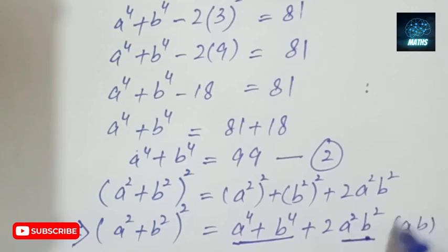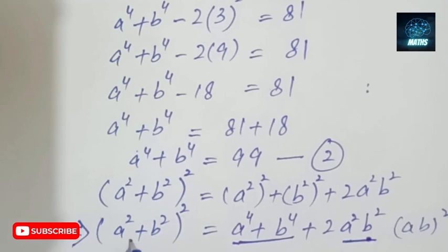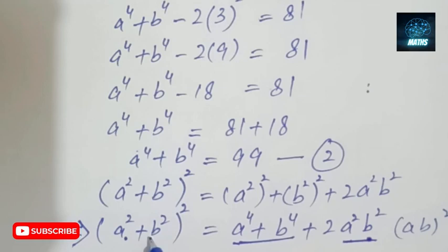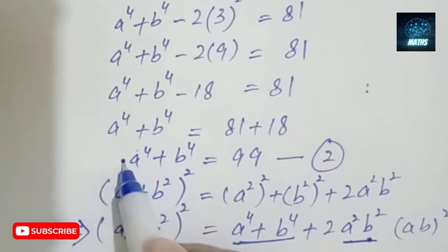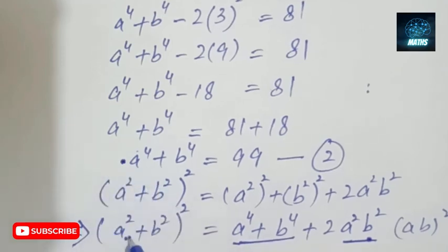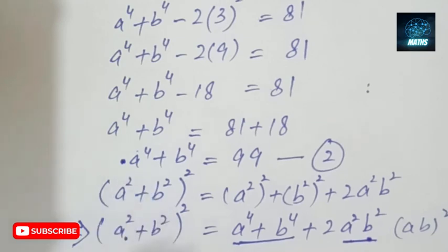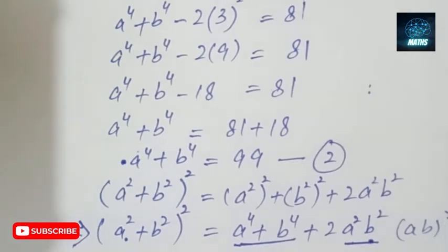I can write (a² plus b²)² using the identity, because I know the value of a⁴ plus b⁴ and the value of ab. So I can find the value of a² plus b², and from that further find the value of a plus b. First I find a⁴ plus b⁴, then move to a² plus b², and then move to a plus b.